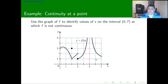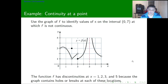At x equals 5, it's even easier to see because there's an asymptote, so there's a break and the function is probably going to infinity — there's no smooth transition. Finally, x equals 7 is also not continuous because the function is not defined there and there's no limit coming from the right side. So, we can talk about discontinuities at 1, 3, and 5 because the graph contains holes or breaks at each of those locations.